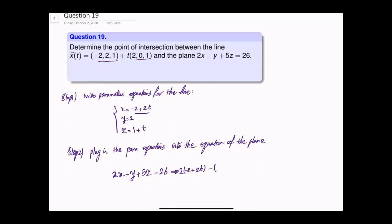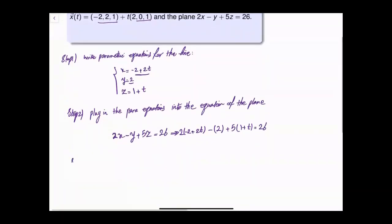Minus, for y we put 2, and for z we put 1 + t. This will give us an equation in t.